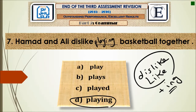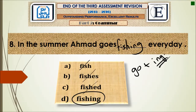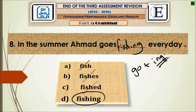Question number eight: 'In the summer, Ahmed goes ___ every day.' Go must be followed by the ing gerund form. We don't use fish or fished — it's fishing. So fishing is the answer: 'Ahmed goes fishing every day.'